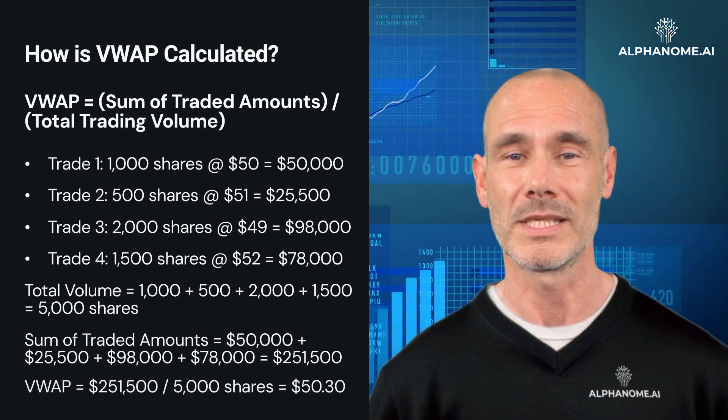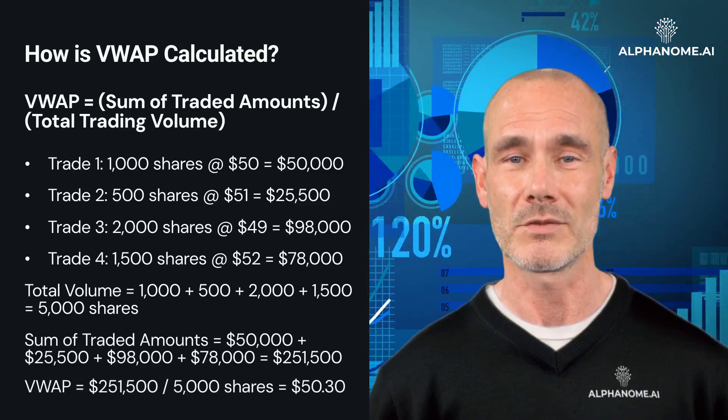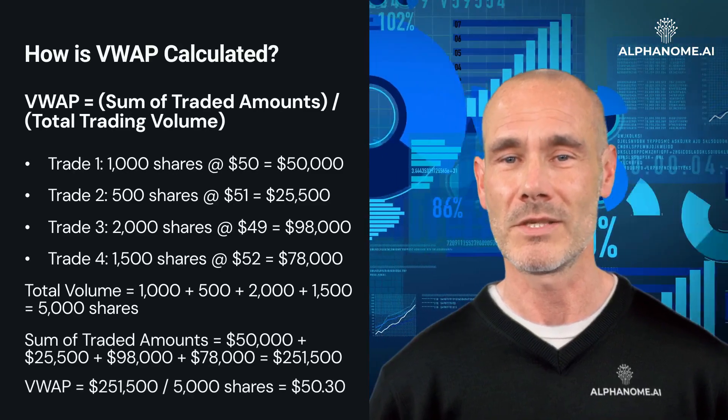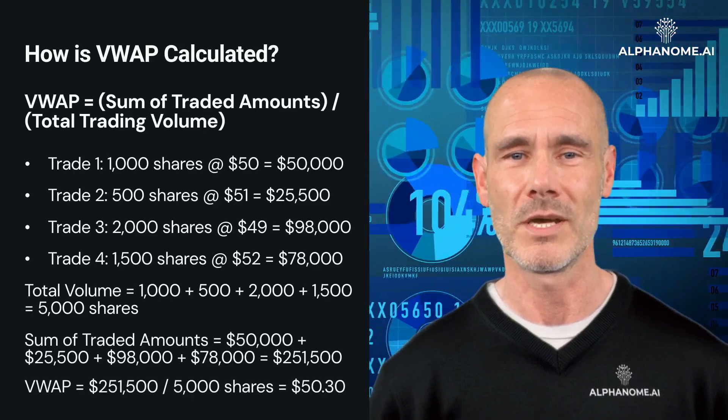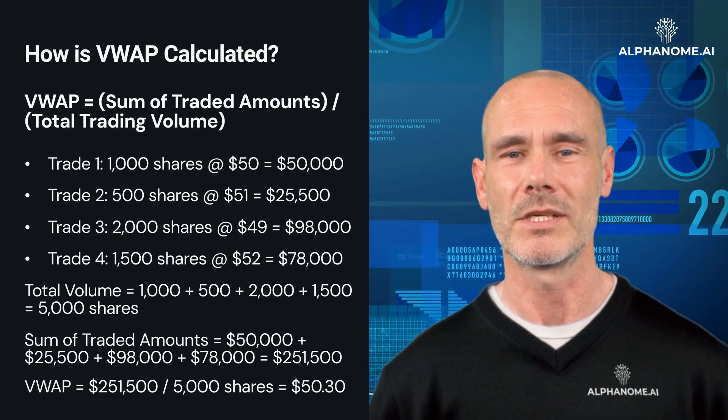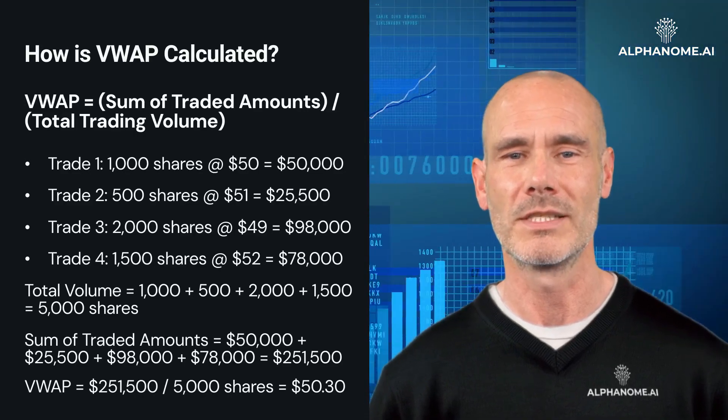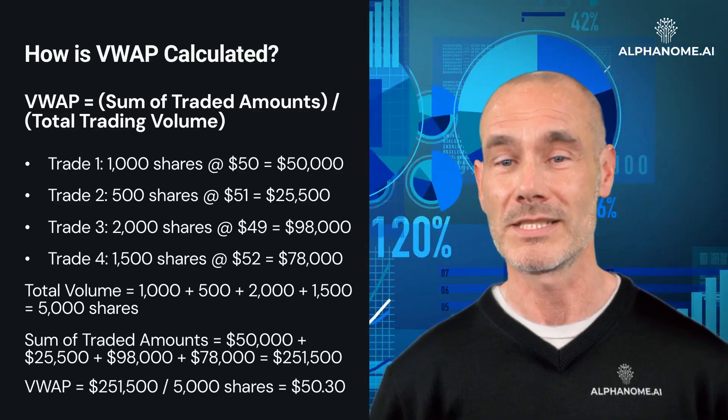VWAP equals $251,500 divided by 5,000 shares, which equals $50.30.